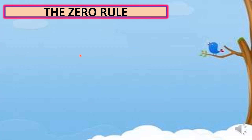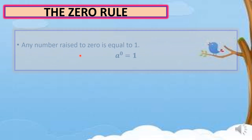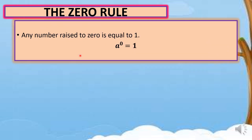Let's start with the zero rule or the zero exponent. The definition states that any number raised to zero is equal to one. In symbol, we have a raised to zero equals one. Always take note of that. To understand better, let's have some examples.